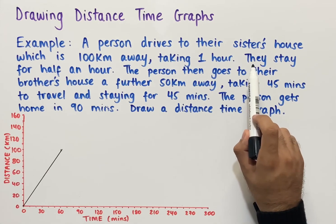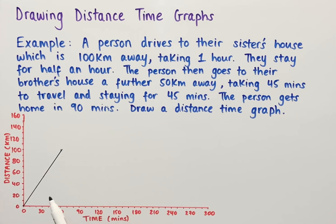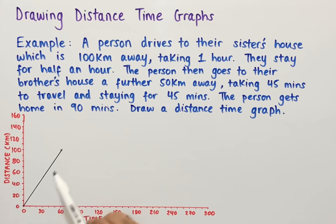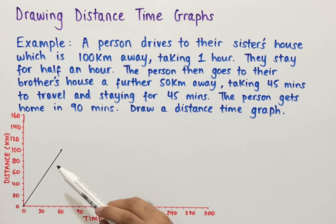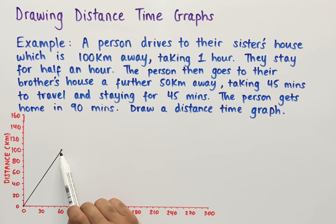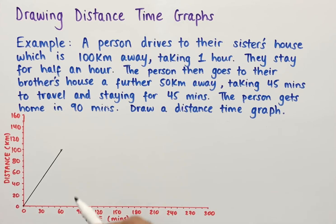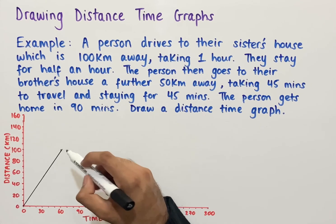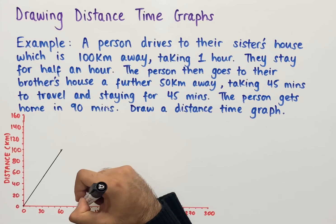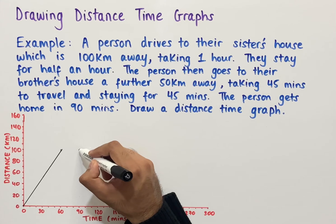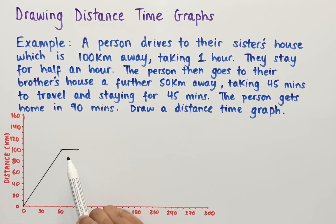We're then told that the person stays for half an hour. Since they've traveled 100 kilometers to get to their sister's house and are now staying there, the distance isn't changing. After 60 minutes we add on 30 minutes to get to 90 minutes. So we plot another point at (90, 100) and join the two points together.